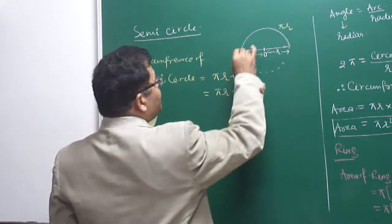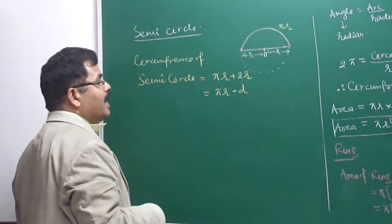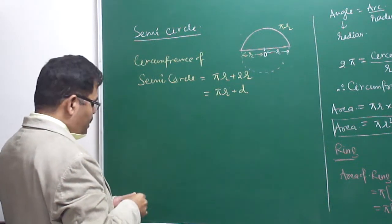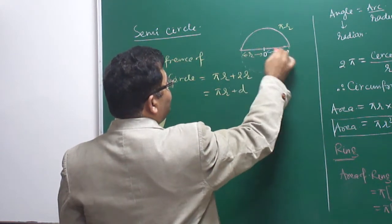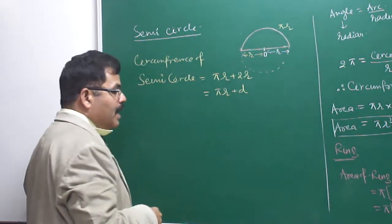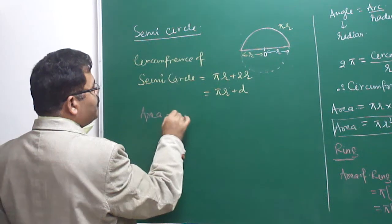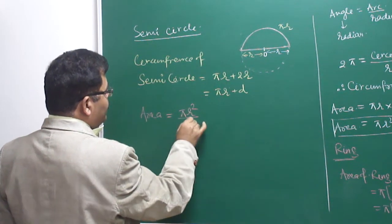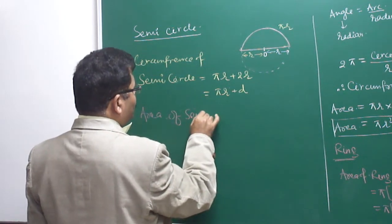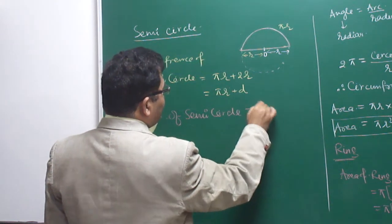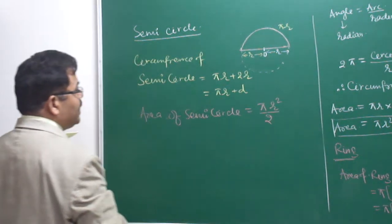The circumference of a semicircle is πr + 2r, including the curved length plus the diameter. For the area, the semicircle is simply half of the full circle, so the area of a semicircle is πr²/2.